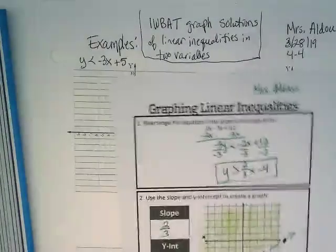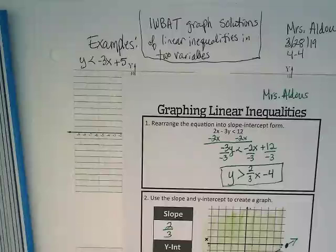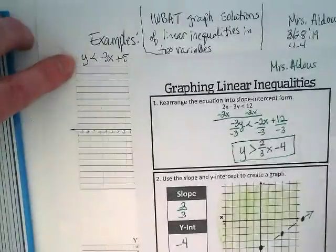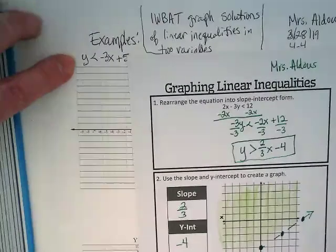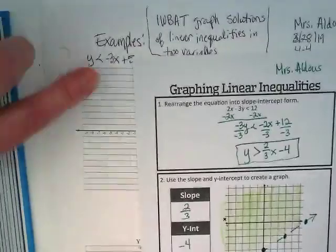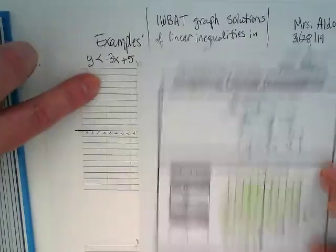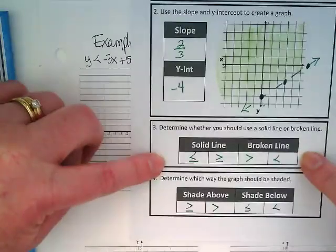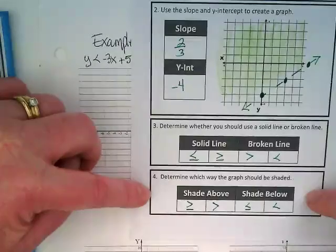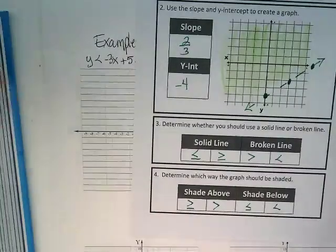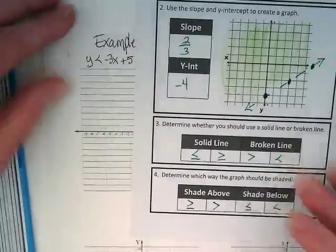Referencing the notes we took on how to graph inequalities, notice this is already in y equals mx plus b form, except instead of an equal sign we have what kind of symbol? Less than. So think about: is it going to be a solid line or a broken line? And is it going to be shaded above or below the line? Below. So just looking at that inequality, there's a couple of things to think about before we start graphing.